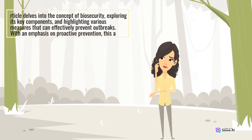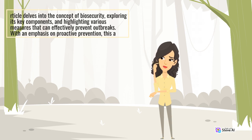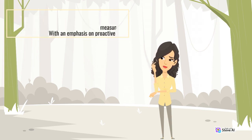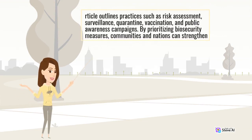exploring its key components and highlighting various measures that can effectively prevent outbreaks. With an emphasis on proactive prevention, this article outlines practices such as risk assessment, surveillance, quarantine, vaccination, and public awareness campaigns.